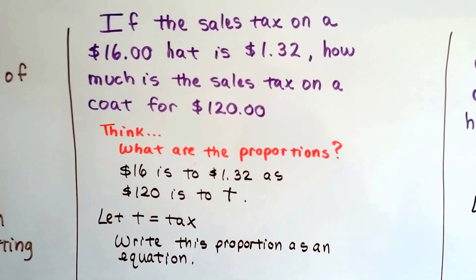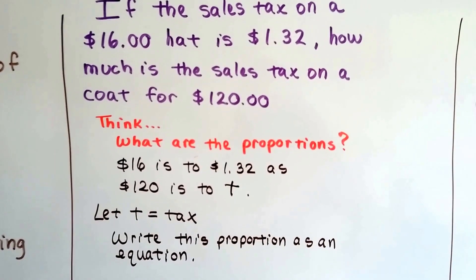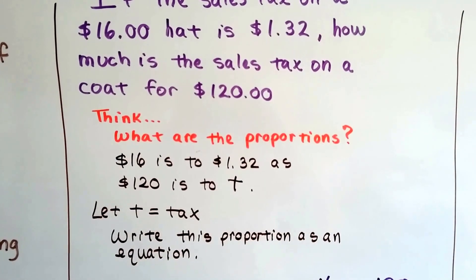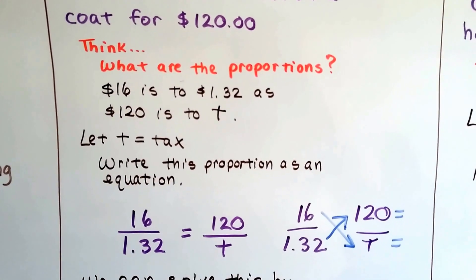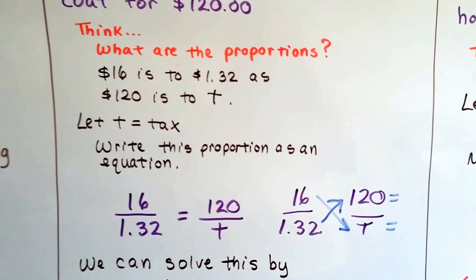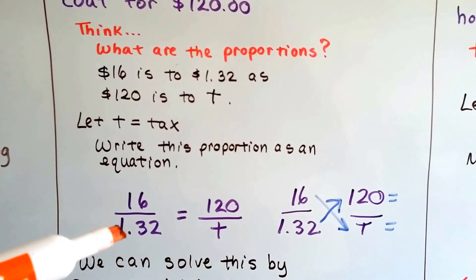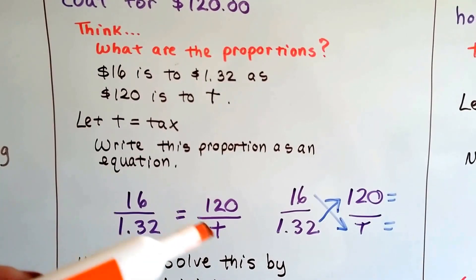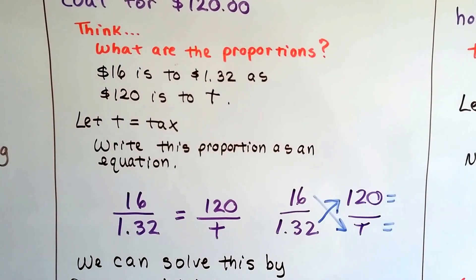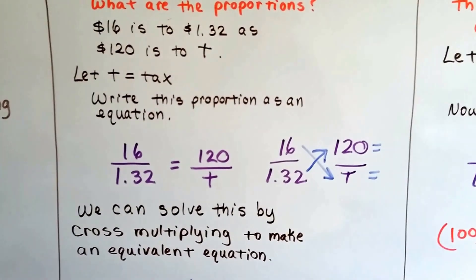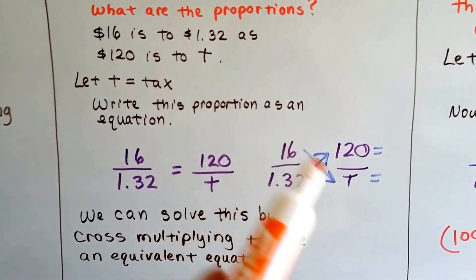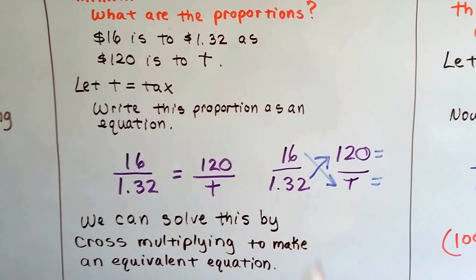Now we've got $16 is to $1.32 as $120 is to T, the tax. I'm going to write an equation using this proportion. So 16 over $1.32 is equal to $120 over T. We can solve this by cross-multiplying to make an equivalent equation. We do 16 times T and $1.32 times $120.